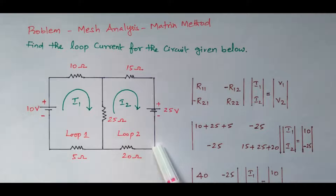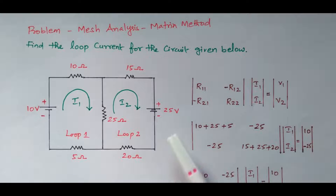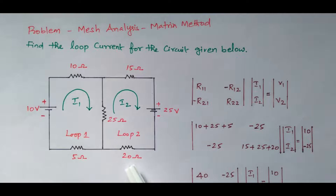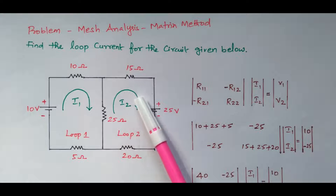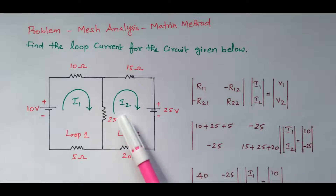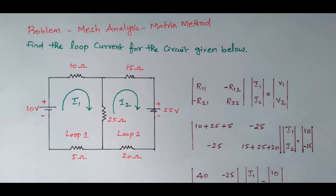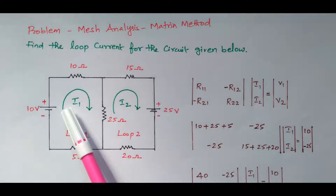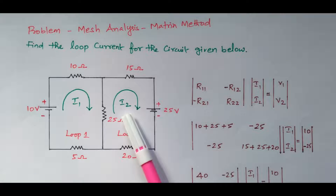This is another loop — loop two. We can consider this as the second loop. It consists of the 25 ohm, 25V voltage source, 15 ohm, and 20 ohm elements. The current flowing through the second loop is I2, also flowing in the clockwise direction. So we have two loops: loop one with current I1, and loop two with current I2, both clockwise.